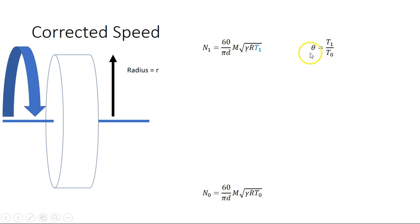So here is an expression, it's called theta. So theta is the ratio of the temperature t1 to the reference temperature t0. And I can rearrange that to say that t1 is equal to t0 times theta. And I'm going to substitute that back in here.